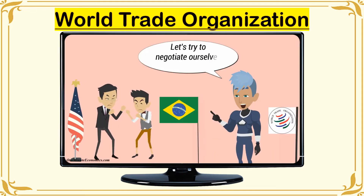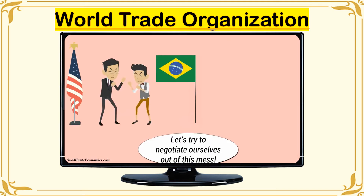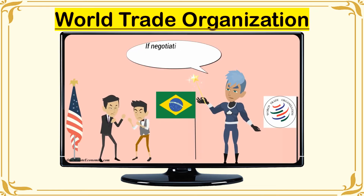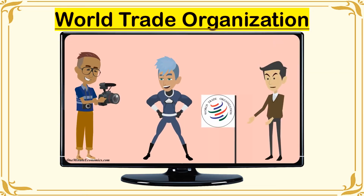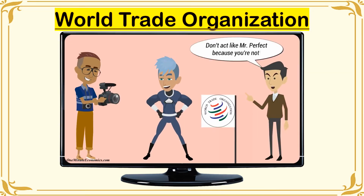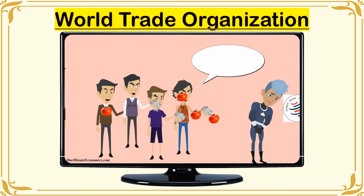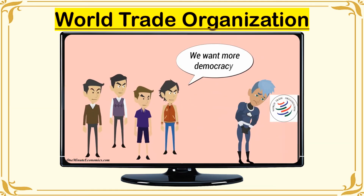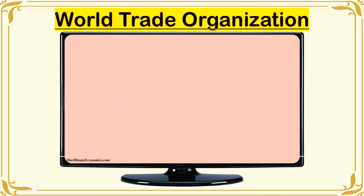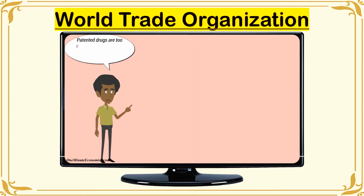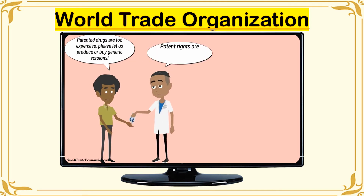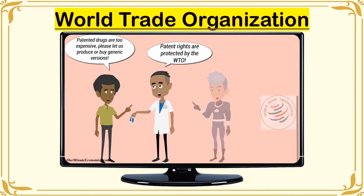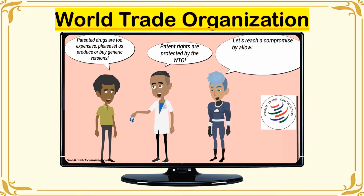Two, whenever disputes arise, the WTO tries to resolve them through negotiations. Three, if necessary, the organization can even impose sanctions on countries which break the rules. But like any other organization, the WTO also receives criticism. Some citizens believe letting the WTO create rules that their country has to follow is undemocratic. In certain cases, the WTO risks hurting people to protect business interests. For example, poor countries that can't afford expensive patented medicine, such as HIV drugs, had to wait until patents expired before producing or buying cheaper generic versions.